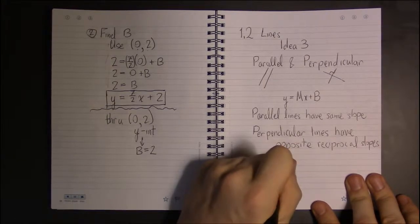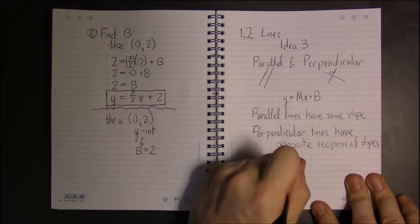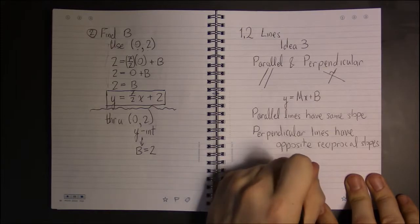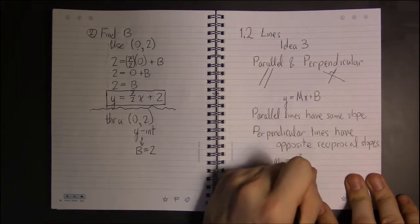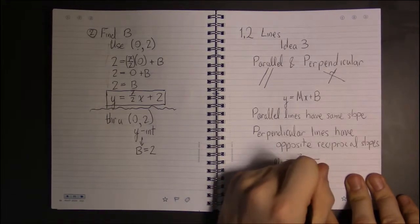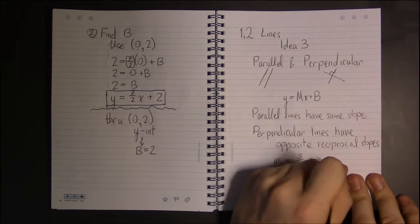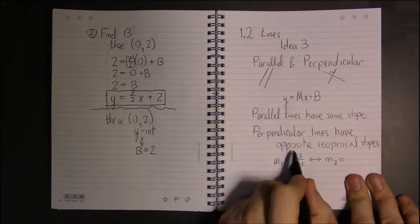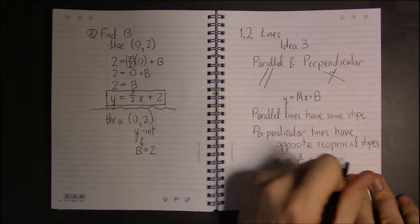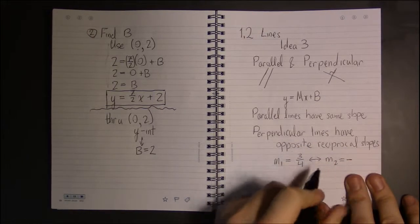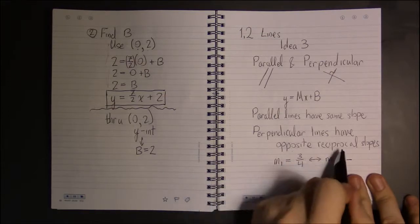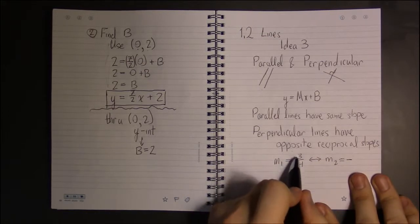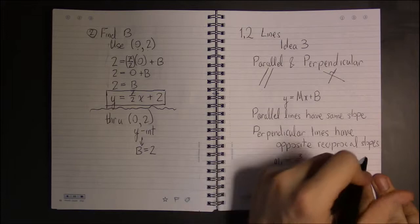So if the slope of one line is, say, 3 fourths, the slope of its perpendicular line, or one of its perpendicular lines, the opposite tells me to change the sign. The reciprocal tells me to flip the fraction.